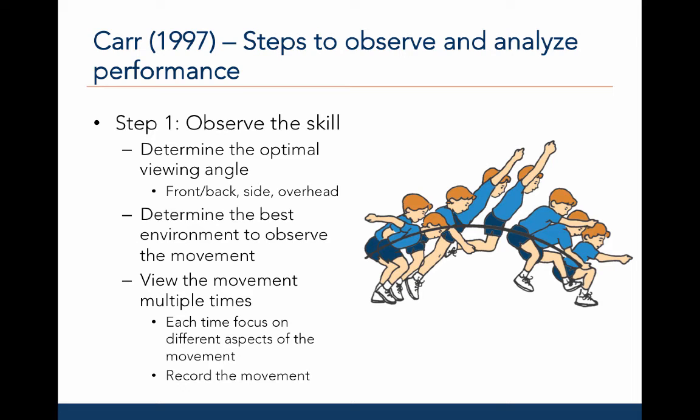Next, determine the best environment to observe the movement. For example, if you are interested in observing someone running, you must have sufficient space. Alternatively, if observing a standing long jump, one must make sure the surface is such that repeated attempts do not cause injury and thus cause different movement patterns to emerge. You must also view the movement multiple times, each time focusing on different aspects. It may be best to record the movement and re-watch the video to assess different aspects upon second, third, or fourth viewings.